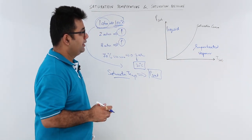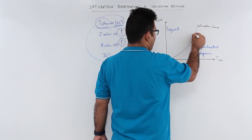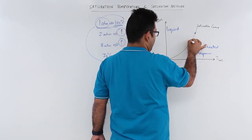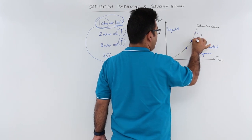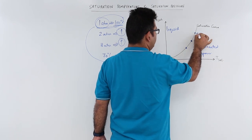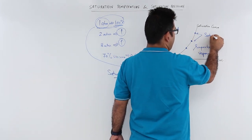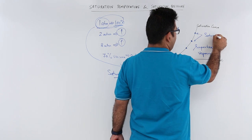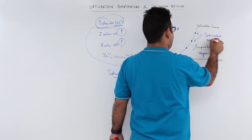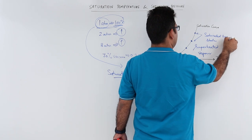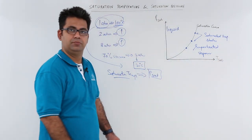Now whenever you have a point lying on the saturation curve, these are called saturated states — what I would call vapor states.